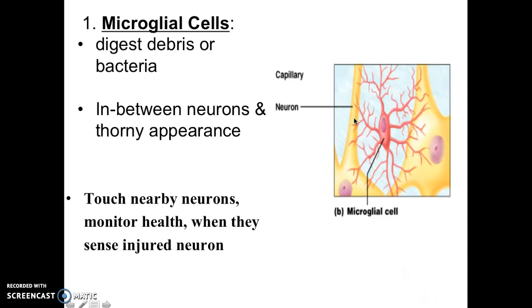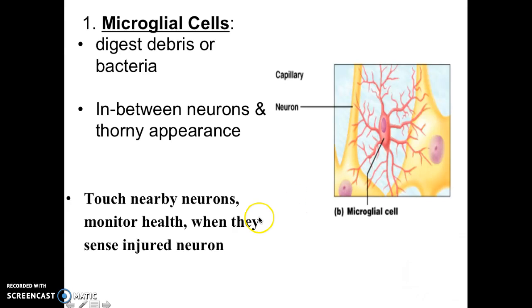The first one is called microglial. You need to be able to identify it by looking at it and knowing its function. The microglial cell looks very spiky — it literally looks like it has thorns. Its job is to digest debris and bacteria. You'll find these in between neurons. They make sure the cell is not being attacked by bacteria — it's kind of like a helper to the white blood cells, but on site all the time. You do not want an infection of your neurological system.